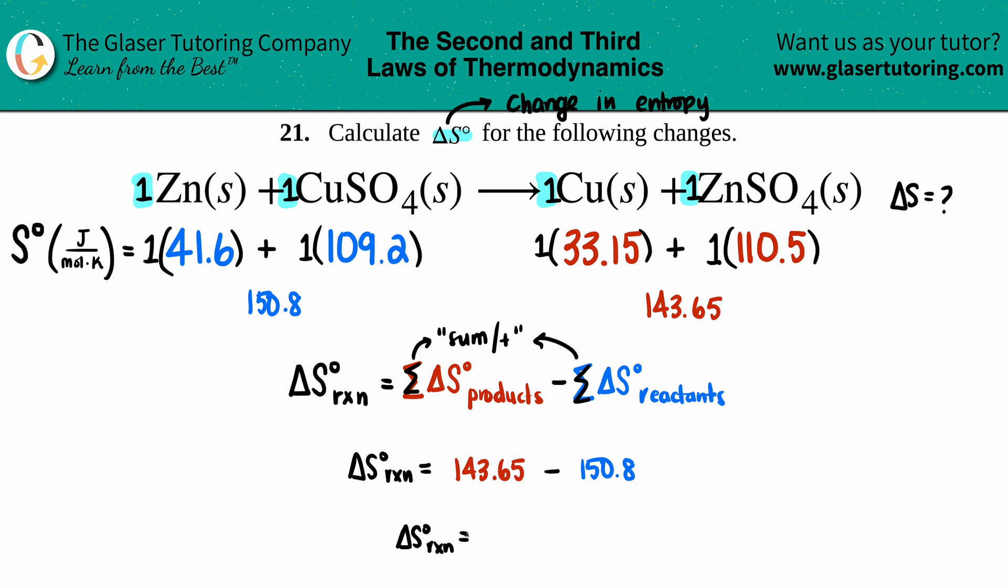Because if we do include significant figures, there's only one after the decimal here, so I have to cap it at one, so it'd be 7.2.